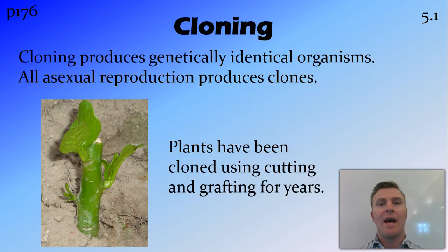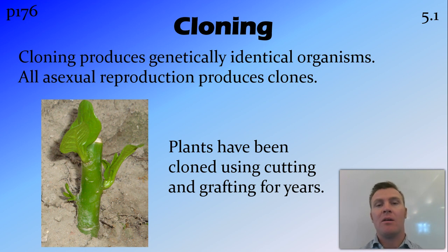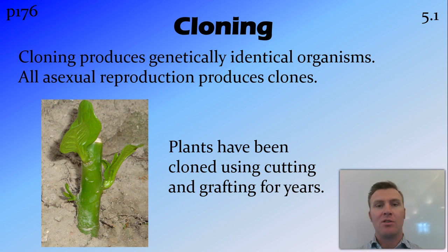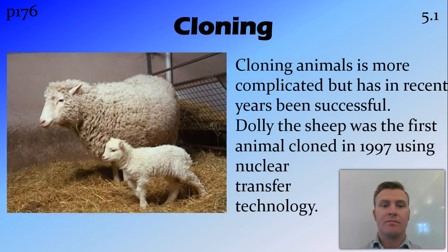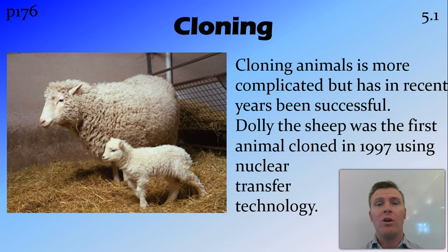Cloning is a word that has certain connotations, but all cloning means is producing genetically identical organisms. Any organism that reproduces through asexual reproduction produces clones. For many years we've been using cloning to cultivate plants through cutting or grafting, where you get a cutting from one plant, plant it, and it grows into another genetically identical plant. This is how we have Cavendish bananas all over the world. The problem is that because all these organisms are identical, there isn't a lot of genetic diversity within the population. Cloning in animals, however, is much more complicated and is something we've only recently been able to get to work at all.